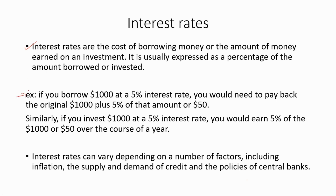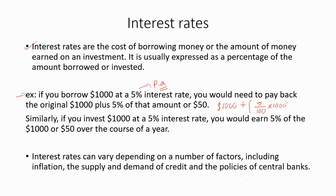For example, if you borrow $1000 at a 5% interest rate, you would need to pay back the original $1000 plus 5% of that amount, which is $50. This is a per annum rate. So you have to return the initial amount of $1000 plus the interest cost. To calculate the interest cost, convert the percentage to a decimal: divide 5 by 100 then multiply by 1000. So this equals $1050, which is the amount you have to repay.